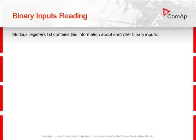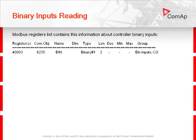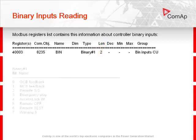The Modbus registers list contains information about control binary inputs. The column 'Registers' gives you the register address, and the column 'Length' contains information about the length of data. A value of 2 means the data length is 2 bytes — that is one Modbus register.